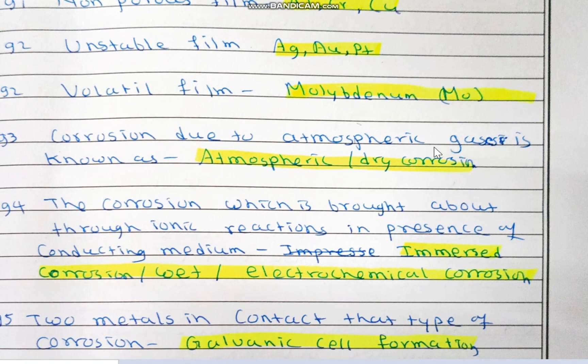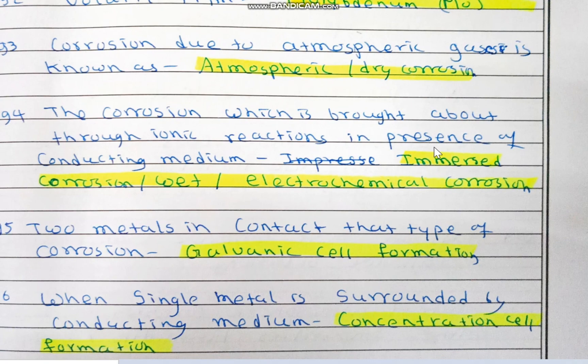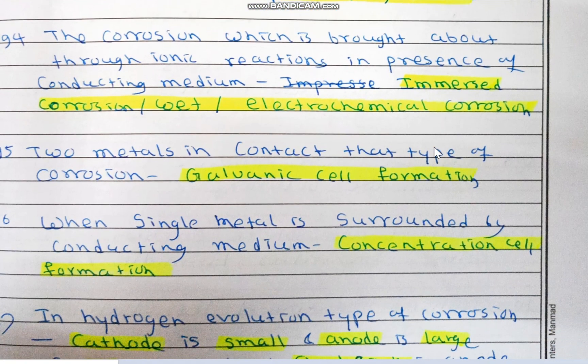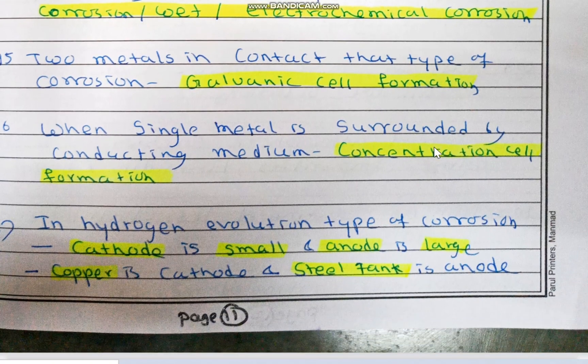Corrosion due to atmospheric gases is known as atmospheric or dry corrosion. Corrosion brought about through ionic reactions in the presence of a conducting medium is known as immerse corrosion, also called wet corrosion or electrochemical corrosion. Two metals in contact: that type of corrosion is known as galvanic cell formation — one metal corrodes, another is protected. When a single metal is surrounded by a conducting medium, it is known as concentration cell formation type of corrosion, also electrochemical corrosion.